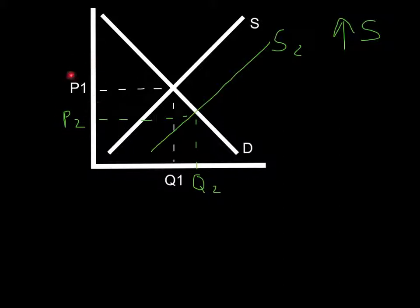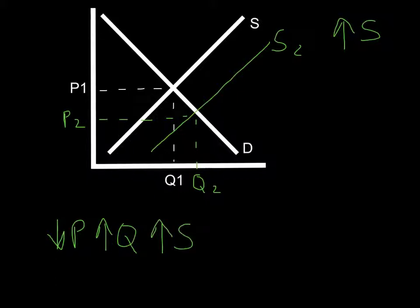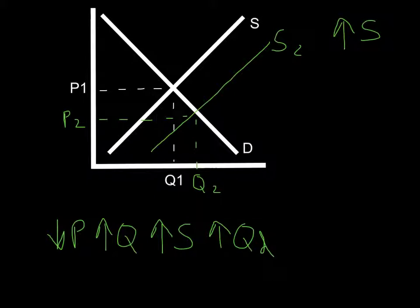That means we're going to get a decrease in the price and an increase in the quantity, and that will always happen when we get an increase in supply — when the supply curve shifts to the right. How do I know it was an increase in supply? Because the curve shifted. What happened on the demand side? The demand curve did not shift — we moved along the demand curve. The quantity increased from Q1 to Q2 as we moved right along the demand curve. So that is called an increase in quantity demanded.